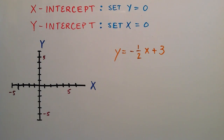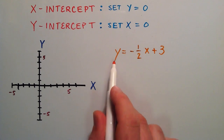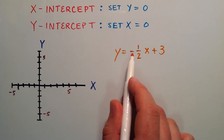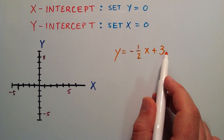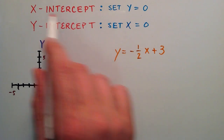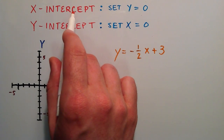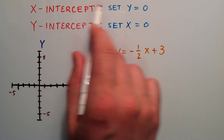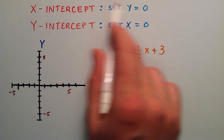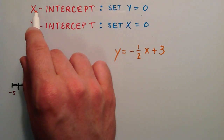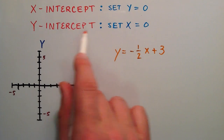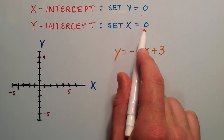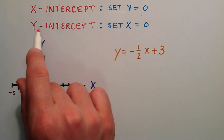The line we're going to be looking at in this tutorial is represented by the equation y equals negative 1 half x plus 3. To find the x-intercept, we're going to set y equal to 0 and then solve for x. To find the y-intercept, we're going to set x equal to 0 and then solve for y.